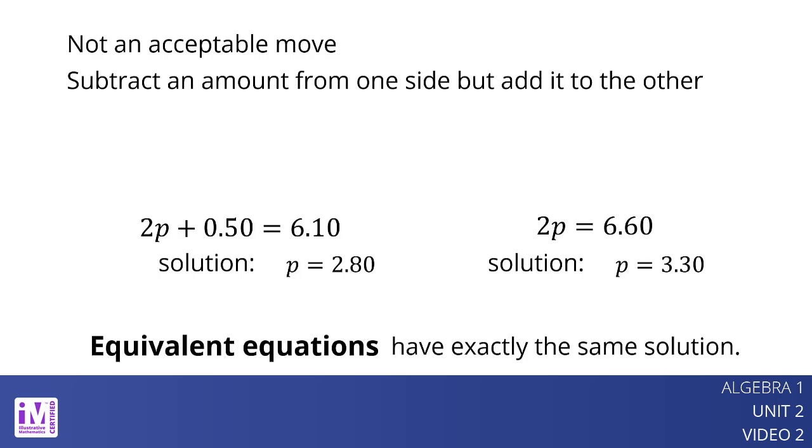Since equivalent equations have exactly the same solution, two equations with different solutions are not equivalent. This means that 2p plus 0.5 equals 6.10 is not equivalent to 2p equals 6.60.